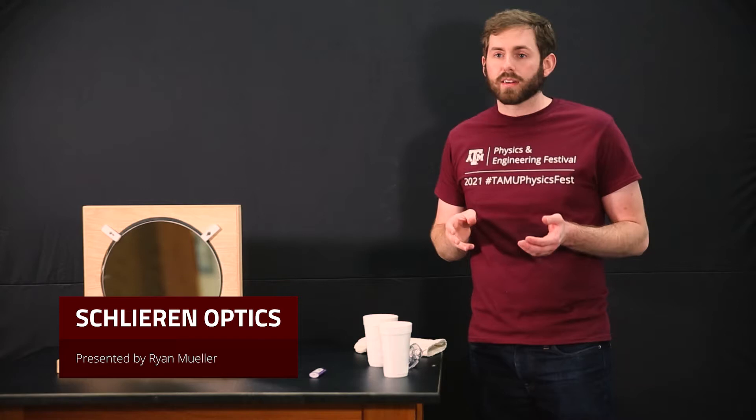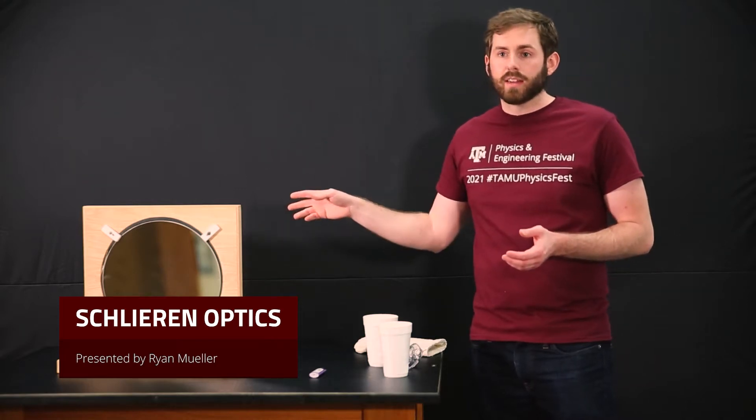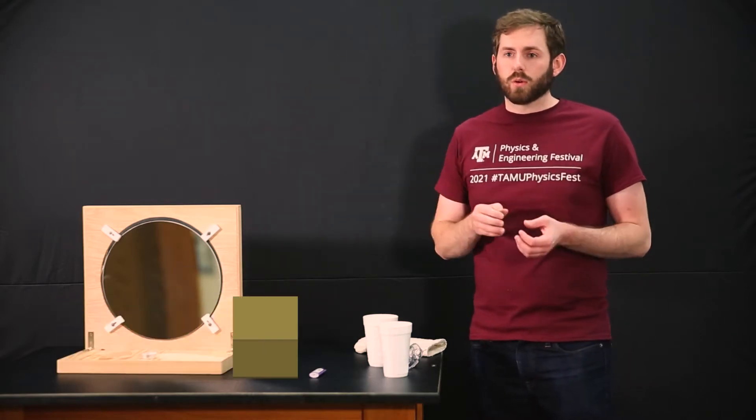Earlier y'all saw how we could visualize heat directly with FLIR. FLIR showed things that were hot as bright white, things were cold as cold blue, but there's another way we can actually visualize changes in air.